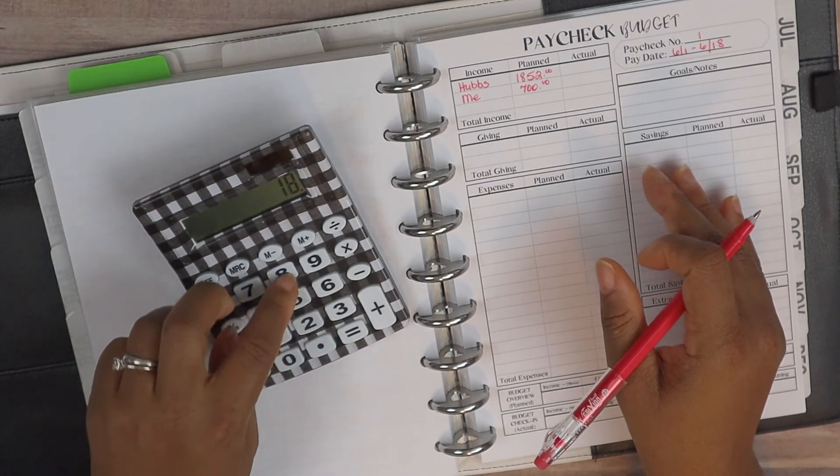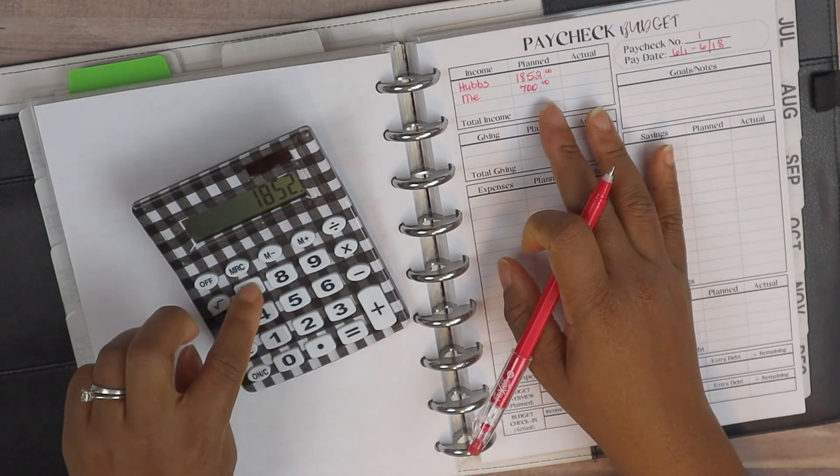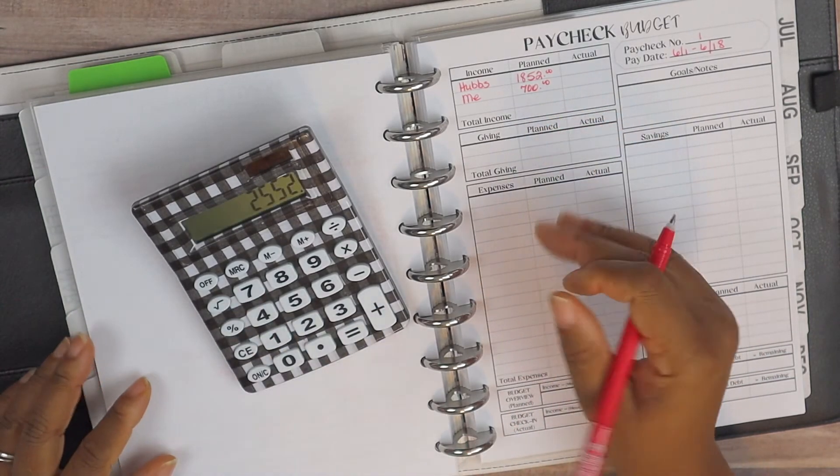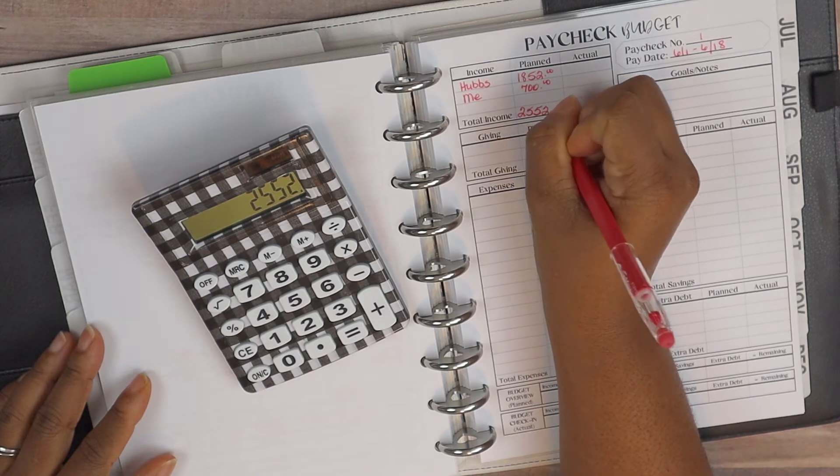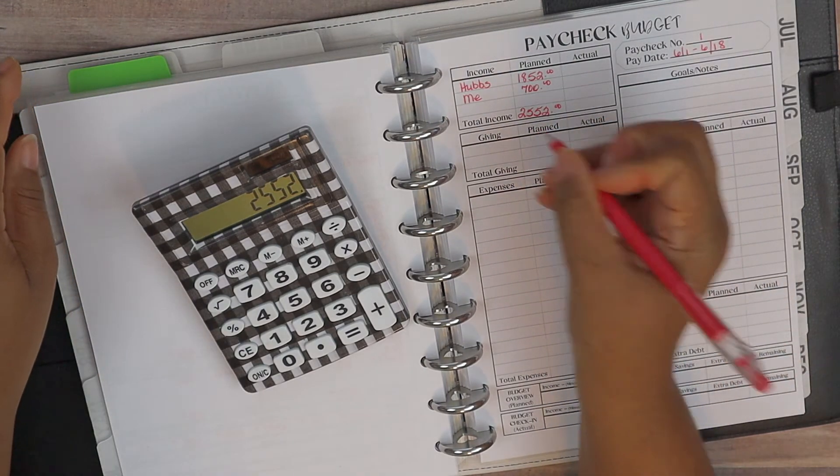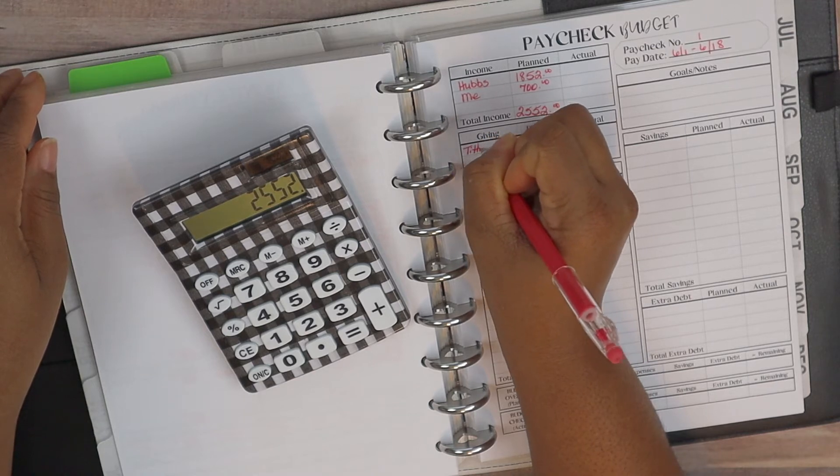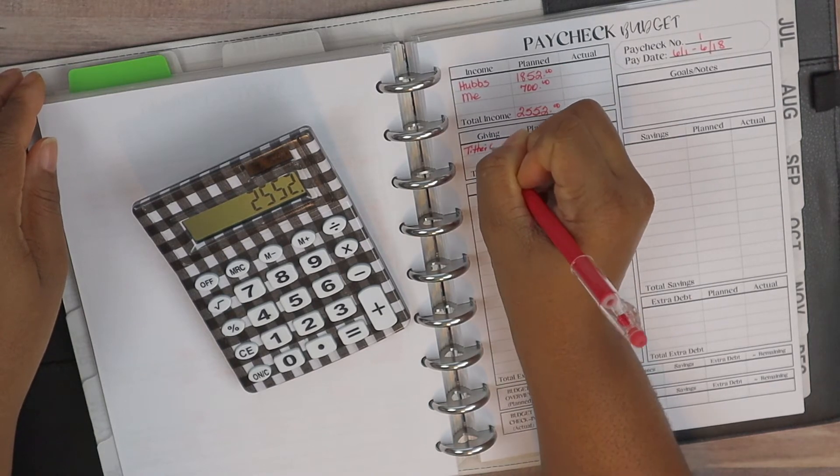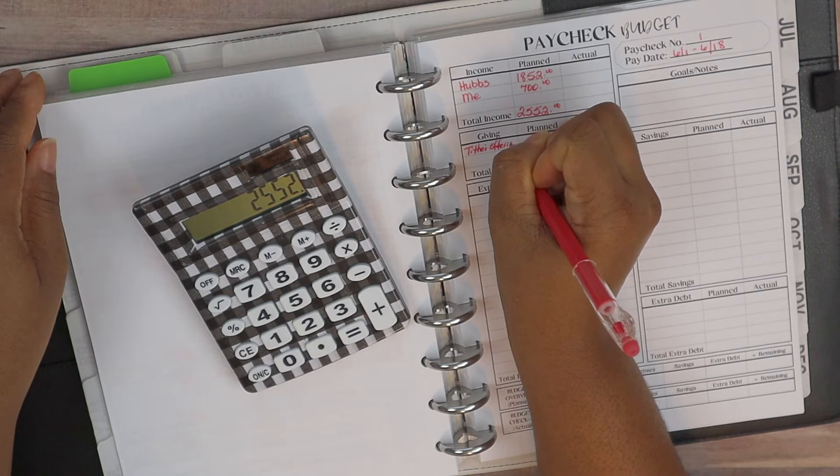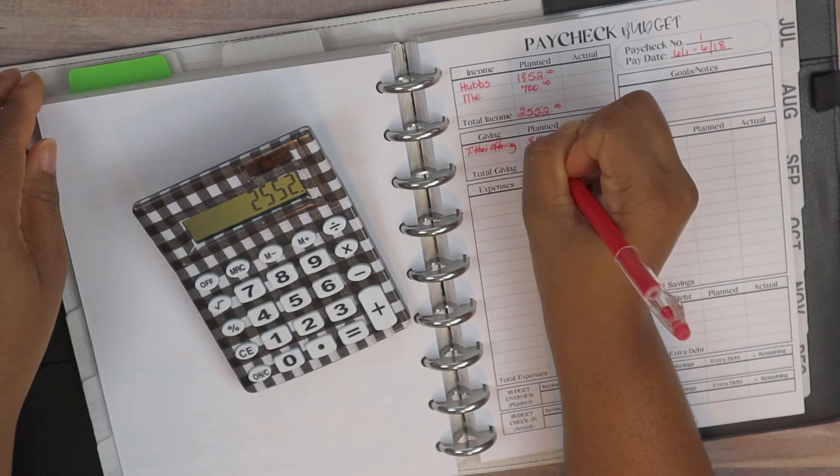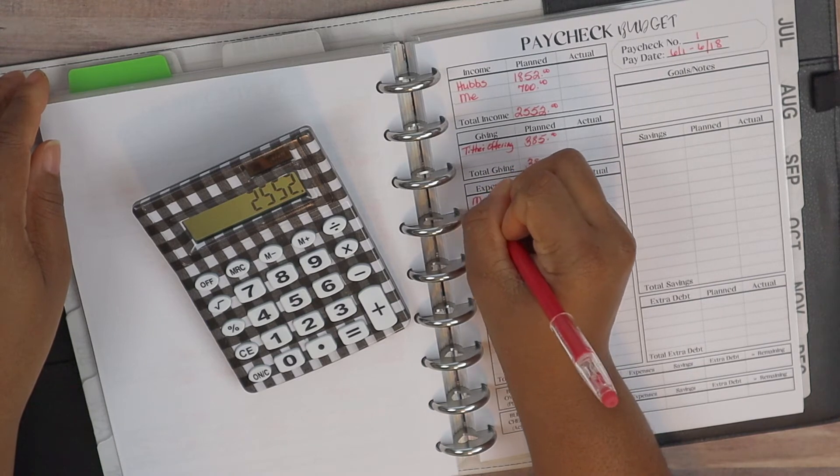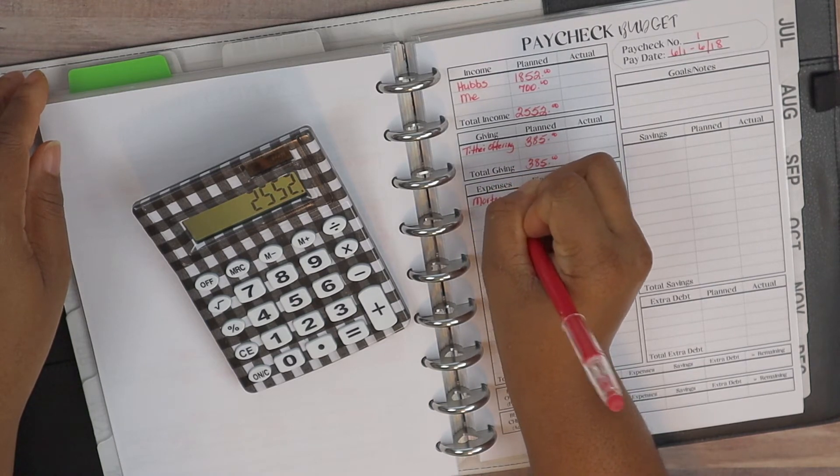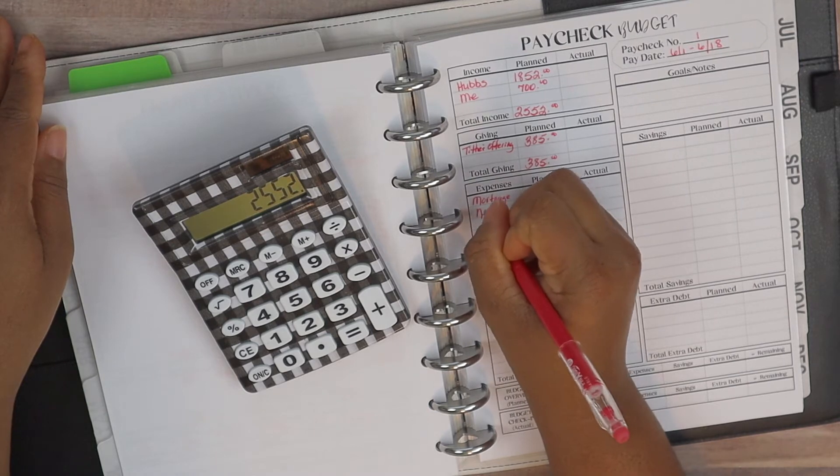All right, so let's go ahead and total. So $1,852 plus $700, we are working with a total of $2,552 as planned. All right, and then as far as our giving for tithe and offering, we are looking at $385 as planned. Our expenses, we've got our mortgage and it is at $502, our Netflix at $15.99.